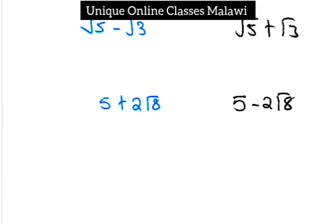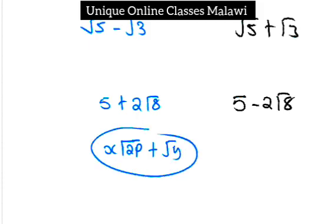If you said the conjugate is 5 minus 2 root 8, then you are correct. It's simple, very very simple. What if you are given x root 2p plus c root y? What do you think is the conjugate of this expression? x root 2p minus c root y. You also clicked, so it's simple, just a matter of dealing with the sign, opposite of your sign.